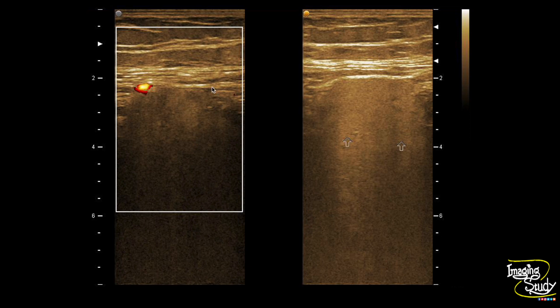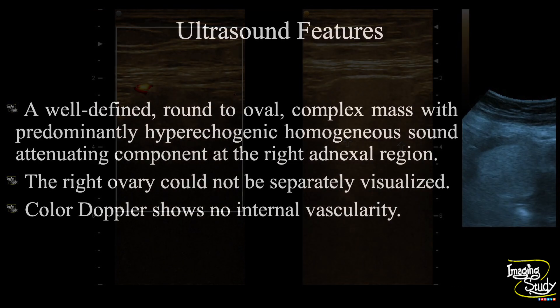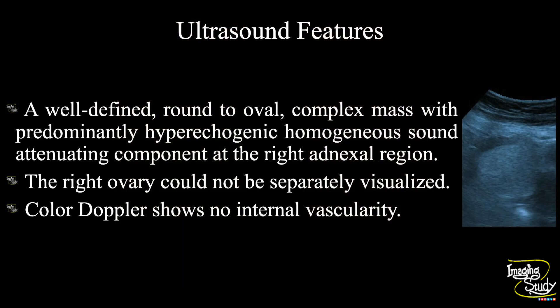So again the lesion with a high-frequency linear transducer. In summary, a well-defined round to oval complex mass with predominantly hyperechoic homogeneous sound-attenuating component at the right adnexal region. The right ovary could not be separately visualized. Color Doppler shows no internal vascularity. These features suggest a case of dermoid cyst or cystic teratoma.